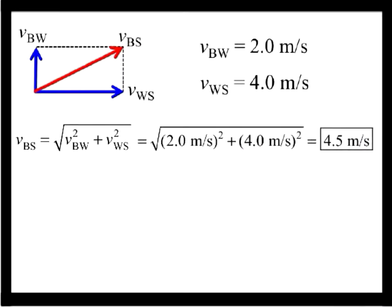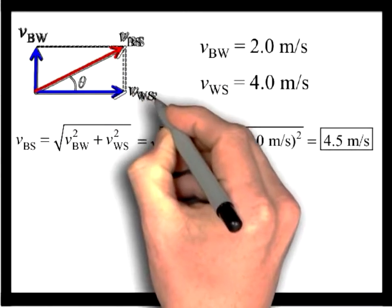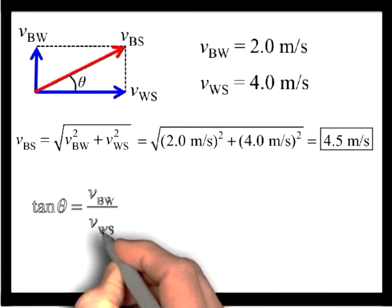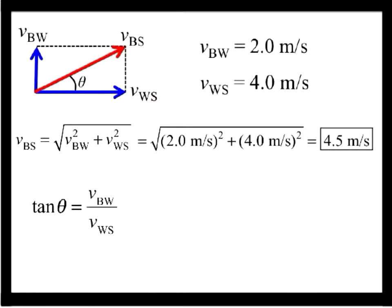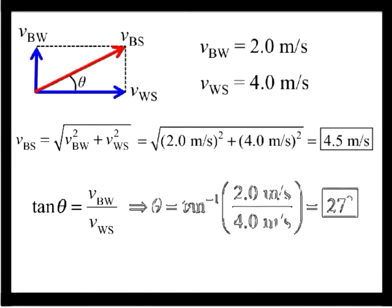The direction of the boat relative to the shore is given by the angle theta. From the figure, we see that tangent theta is equal to the magnitude of VBW over the magnitude of VWS. Solving, we find the angle is equal to 27 degrees.